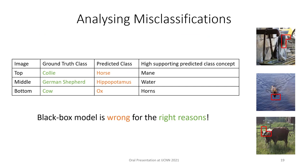A key advantage of our framework is class-specific concepts, which allow us to analyze misclassifications and explain why a specific instance was misclassified. For example, a collie (a type of dog) was misclassified as a horse because the concept with highest support towards 'horse' was the mane, and the collie's visible hair resembled it. A German shepherd was misclassified as a hippopotamus due to the presence of water, and a cow was misclassified as an ox due to the presence of horns. Our black box model was wrong, but it was wrong for the right reasons — explainable only through class-specific concept learning.